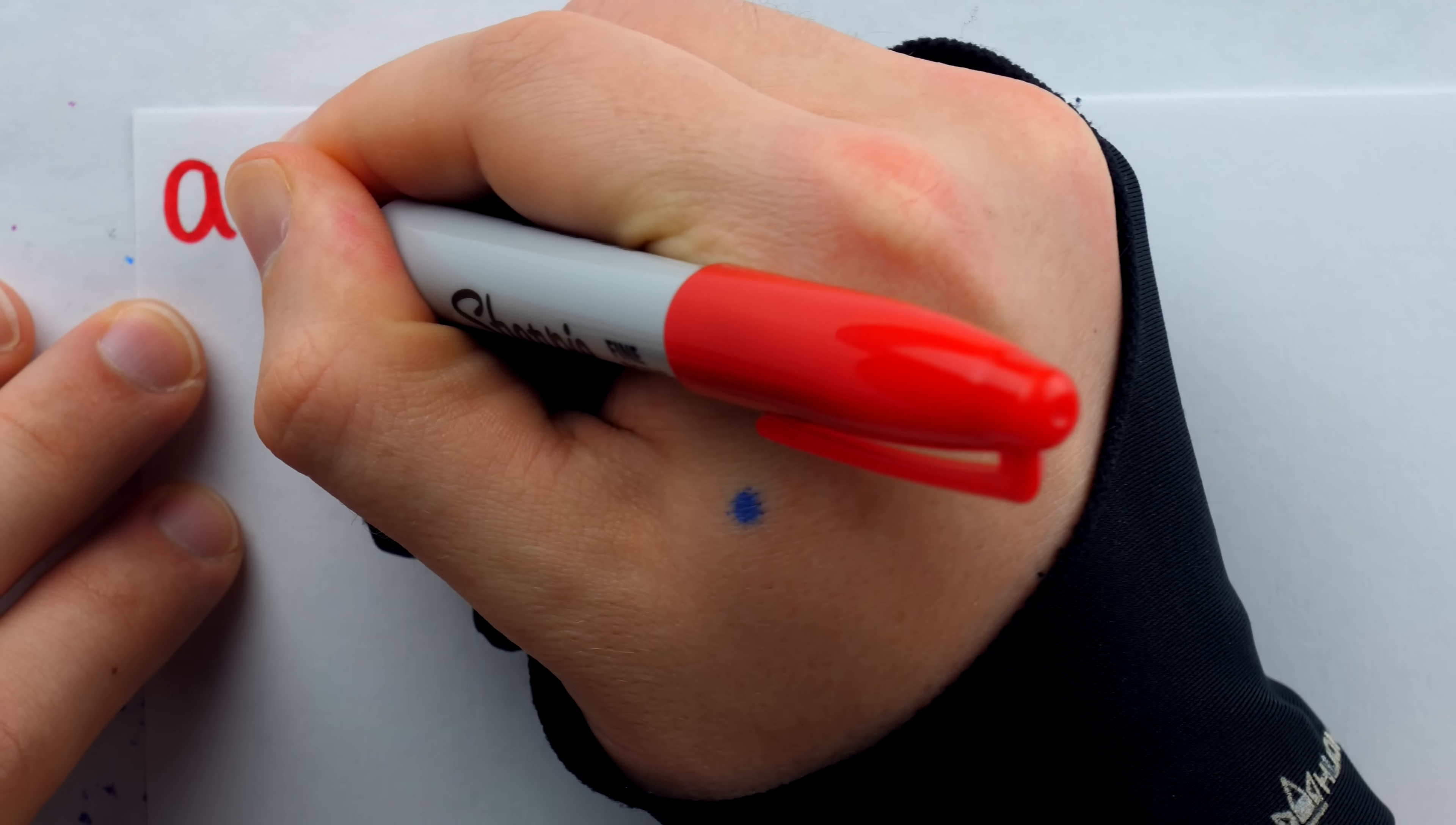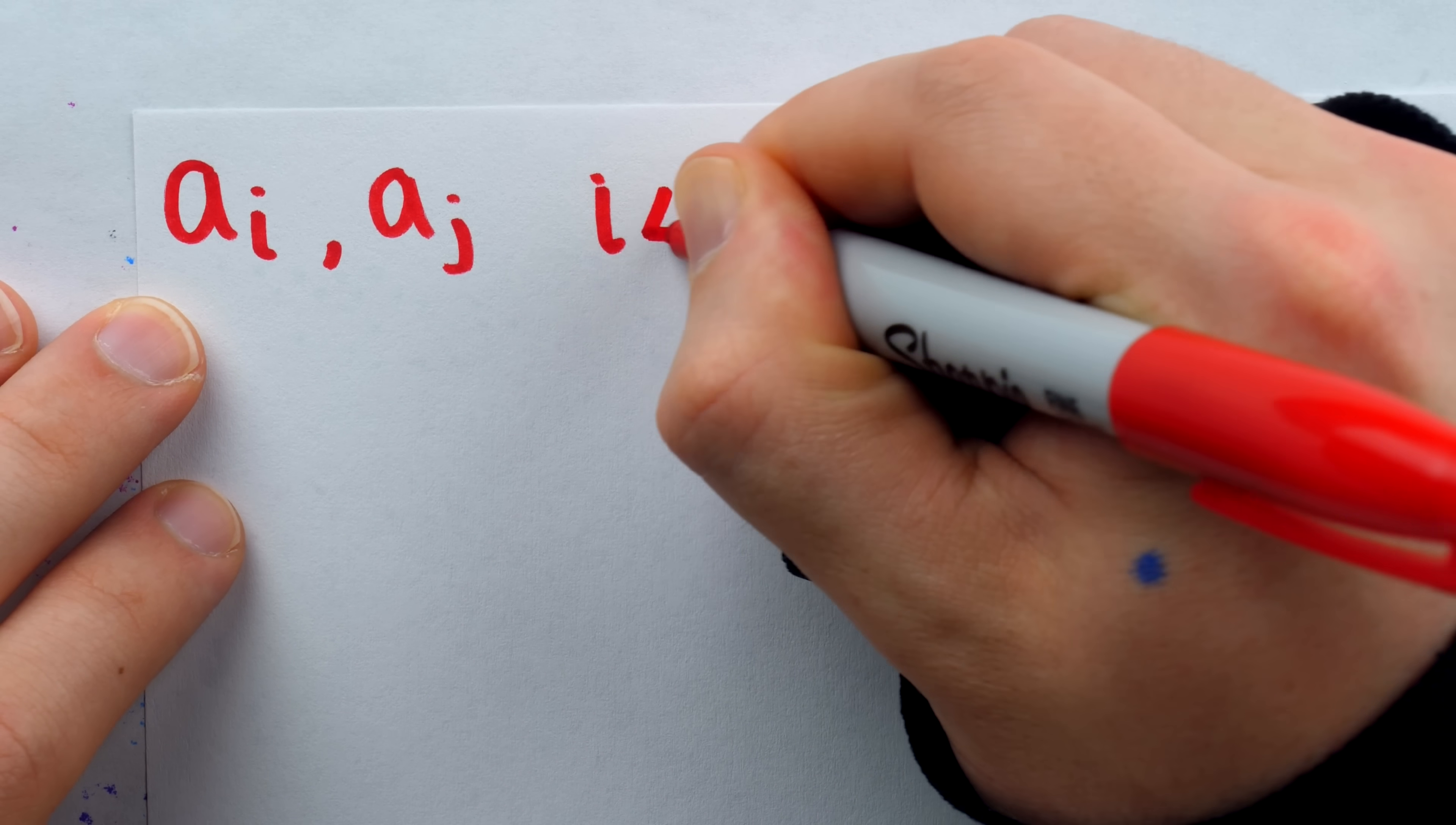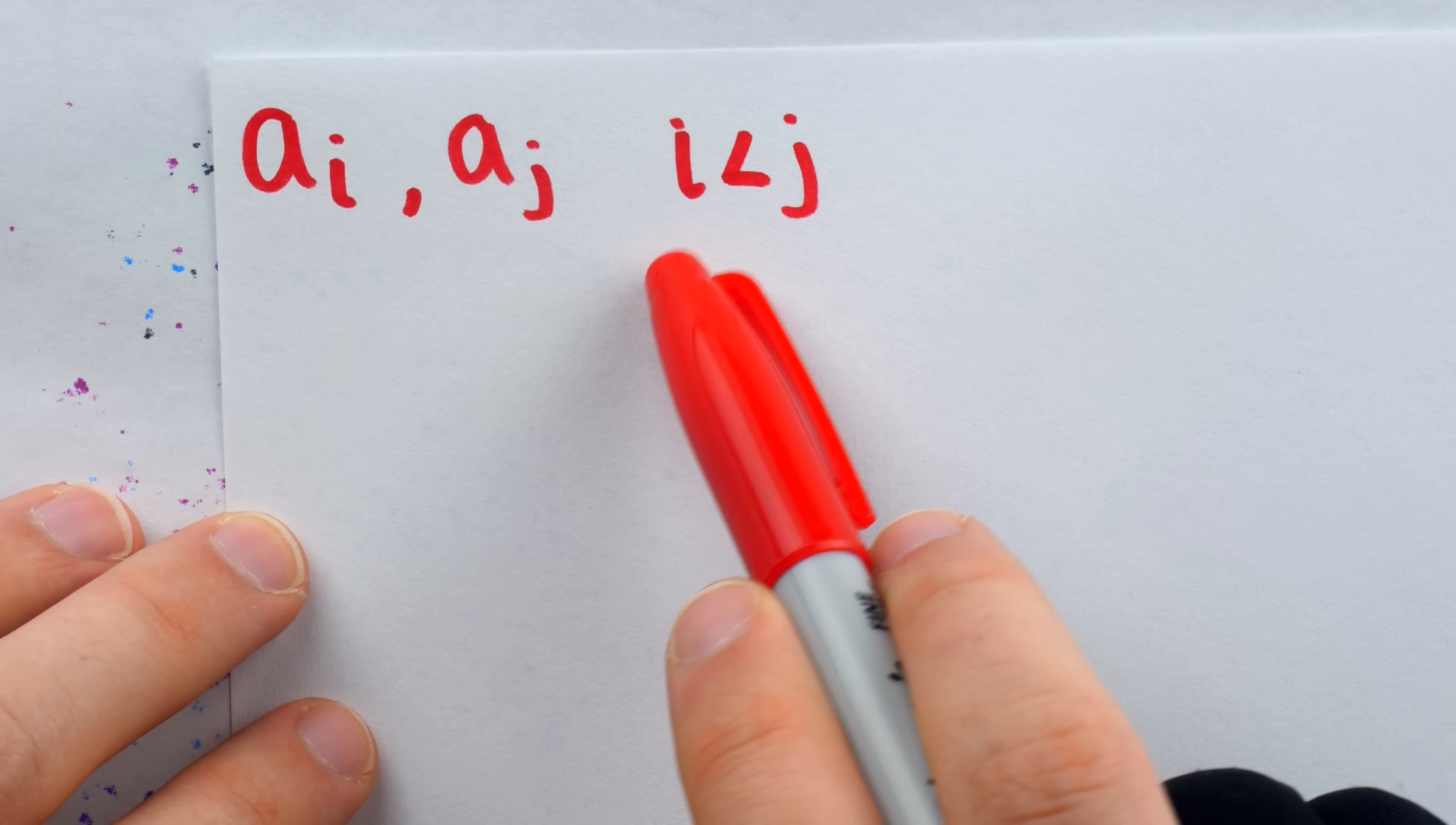Let's go ahead and name these two terms, call them A_i and A_j, and let's say that i is less than j. Of course, they have to be two distinct terms of the sequence, so one of them is bigger. Let's just say that i is less than j.